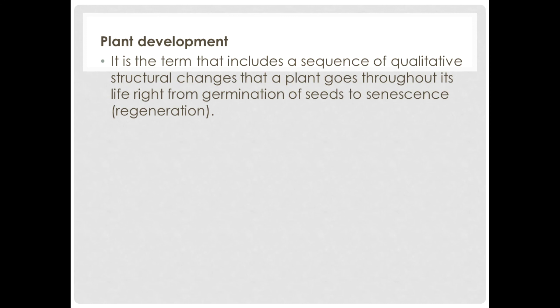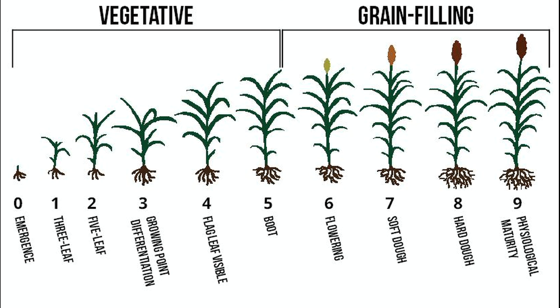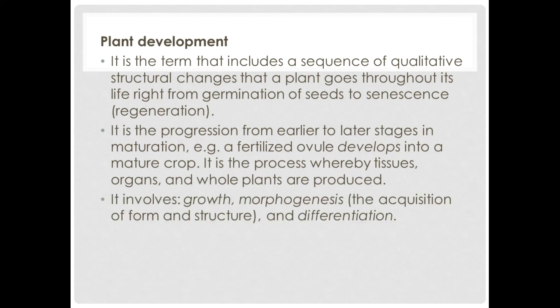Now let's take a look at plant development. It is the term that includes a sequence of qualitative structural changes that a plant goes through its lifetime, from germination of seed to senescence. It is the progression from earlier to later stages in maturation. That is, a fertilized ovule develops into a mature crop. It is the process whereby tissues, organs, and whole plants are produced. It involves growth, morphogenesis, that is the acquisition of form and structure, and differentiation. The development changes may be gradual, or they may be abrupt.